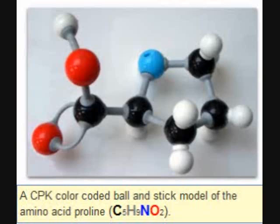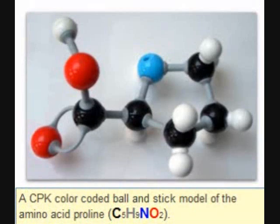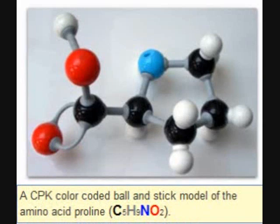The model shown here is that of the amino acid proline, comprised of five carbon atoms, one nitrogen atom shown in blue, two oxygen atoms shown in red, and nine hydrogen atoms shown in gray.